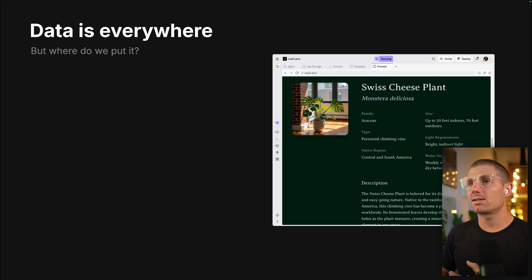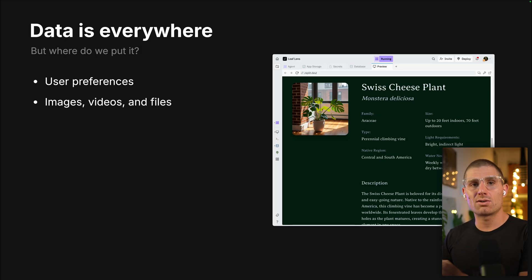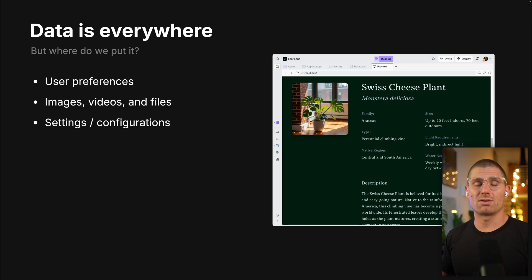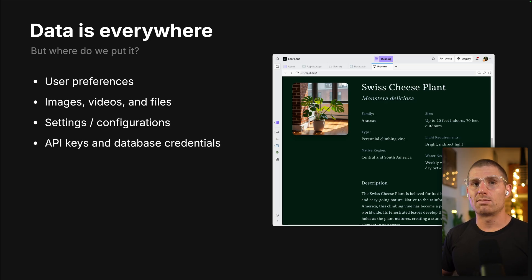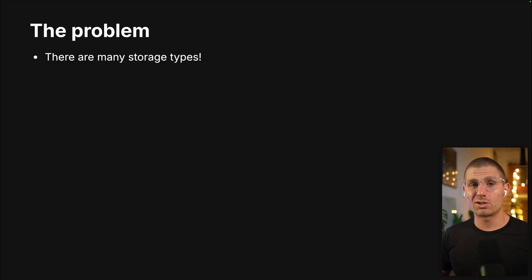The problem is that data is everywhere, but we don't know what to do with it all the time. There are lots of things like user preferences or images, videos, CSVs, PDFs — all of these things. Maybe you have settings or configurations that your users are creating, and maybe you have sensitive data for your application. Where do we put all of these different things? There are a bunch of different types of data storage.